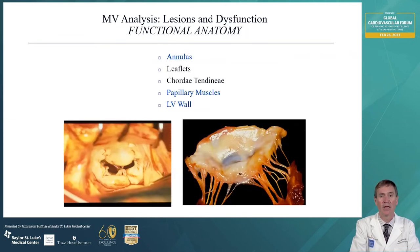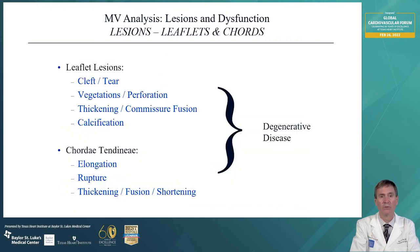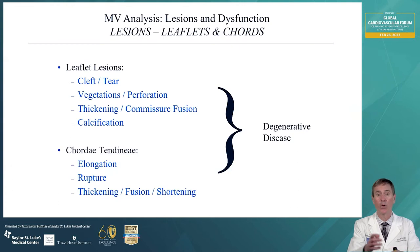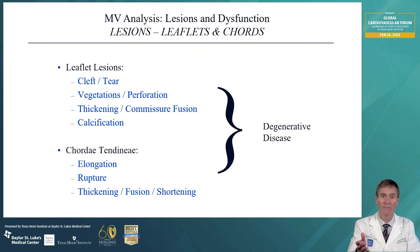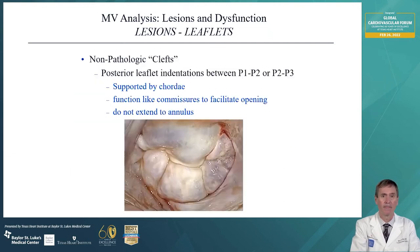Next, let's look at the leaflets and cordae tendineae. Leaflet lesions include cleft or tear of the leaflet. They can include vegetations or perforations seen from endocarditis most often. They can be thickening or commissural fusion, which we might see with rheumatic disease or radiation injury, and calcification of course. The cordae tendineae can become elongated or rupture. There can also be thickening, fusion, and shortening as we see with rheumatic disease. Degenerative disease generally involves changes in both the leaflets and the cordae tendineae.